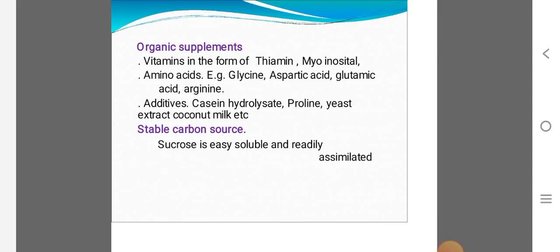Organic supplements like vitamins, the form of thiamine, myo-inositol, amino acids: glycine, aspartic acid, glutamic acid, arginine. Additives to casein, hydroxide, proline, yeast extract, coconut milk, Tween 20.